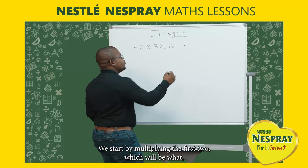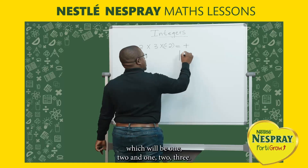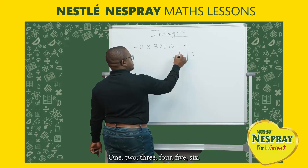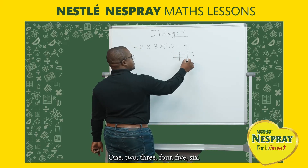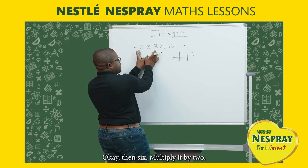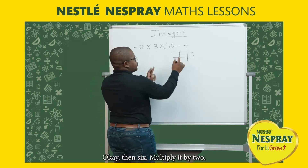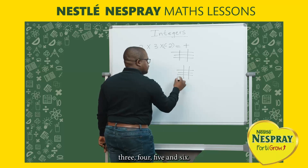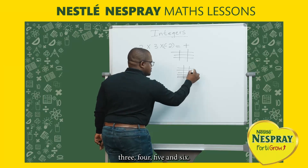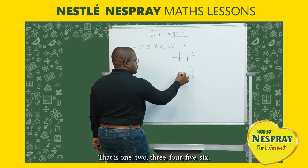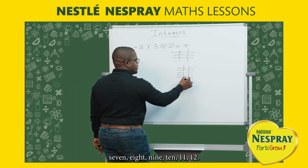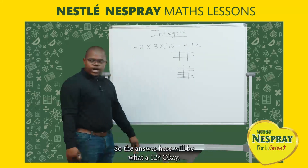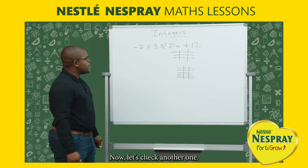We start by multiplying the first two: 2 times 3 gives us 6. Then 6 multiply by 2 gives us 12. So the answer here will be positive 12.